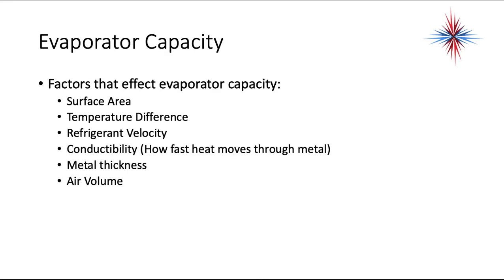Factors that affect evaporator capacity include surface area, temperature difference (delta T), refrigerant velocity, conductivity (how fast heat moves through the metal), metal thickness, and air volume. Air volume is important — systems are designed for 400 cubic feet per minute per ton. So for a 5-ton unit, that's 5 times 400, which equals 2,000 CFM.